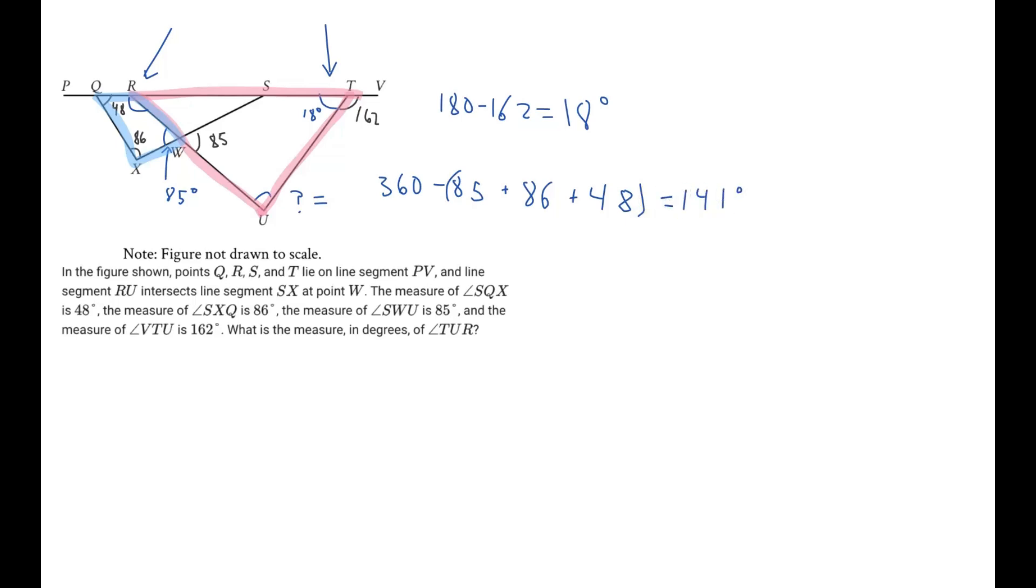Now, what does that really help us find? Well, first off, it's getting a little messy over here, so I'm just going to erase a bunch of this. So, now we've found that this angle right here is 141 degrees. And, again, we have two angles on a straight line. So, that has to be equivalent to 180 degrees. So, what is this angle right here? Well, that's just 180 minus 141. And 180 minus 141 is just 39 degrees.